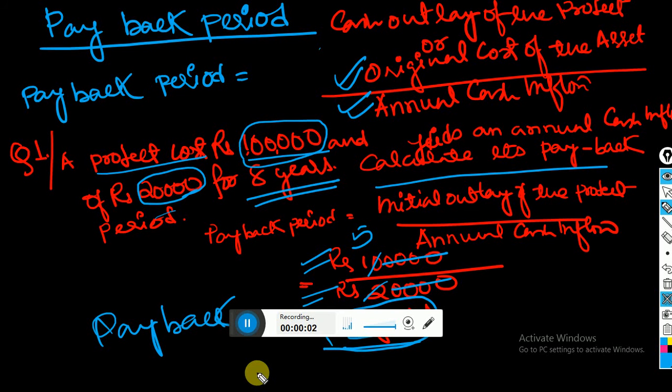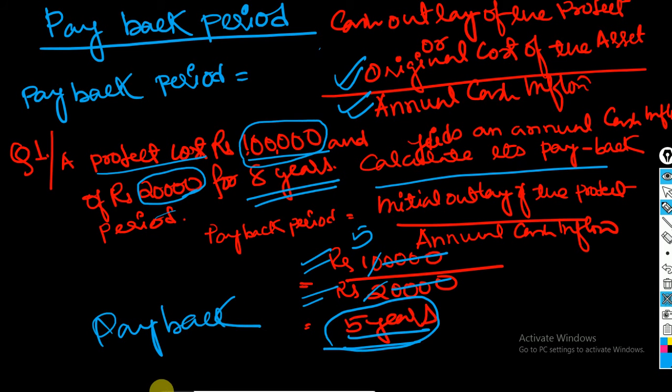So we discussed the traditional method of the practical budget, which is known as the payback period. Payback period is nothing but the method of evaluating the various projects in the practical budgeting.